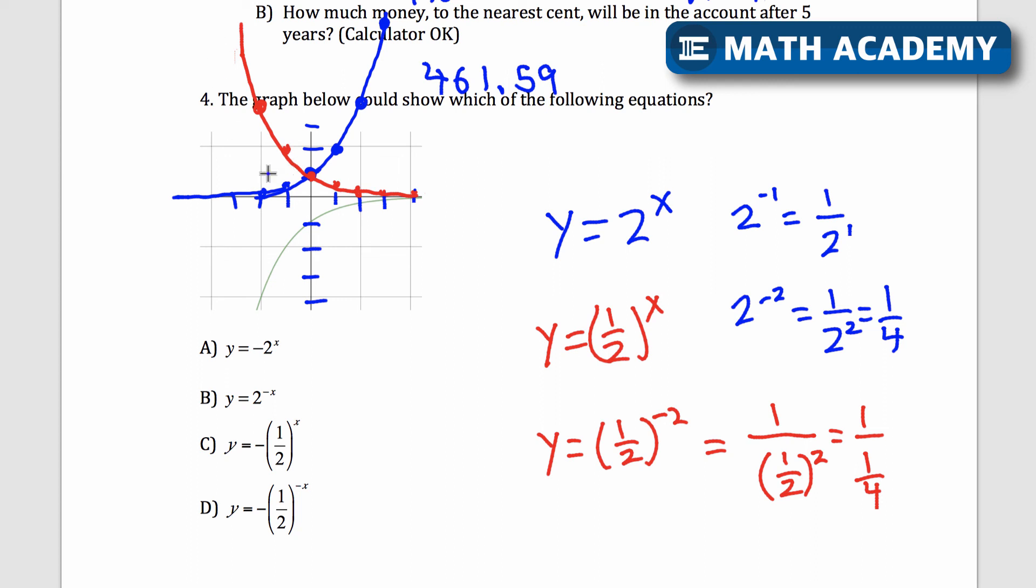1 half to the power of x is actually 2 to the x flipped across the y-axis. And seeing these two graphs can help us figure out what would the answer be here. So it looks like this graph, the green one that we're looking for, is going to be 1 half to the power of x flipped upside down. So I'm looking for the opposite of 1 half to the power of x. And that is choice C right here. y equals negative, or the opposite of, 1 half to the power of x. So there we go. So that's a few problems on exponential functions for the SAT math section.